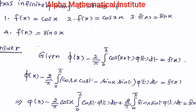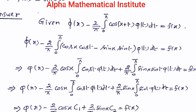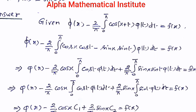So first I am writing the given integral equation. This can be rewritten as phi(x) minus (2/π). Using the formula for cos(x+t), I am expanding this. So cos(x+t) can be written as cos x · cos t minus sin x · sin t, times phi(t) dt, which equals f(x).